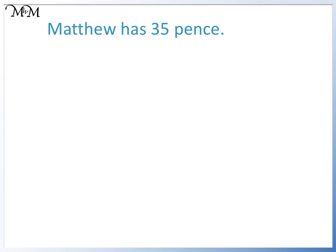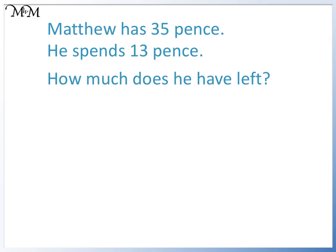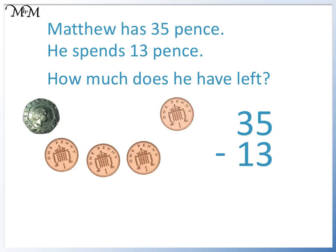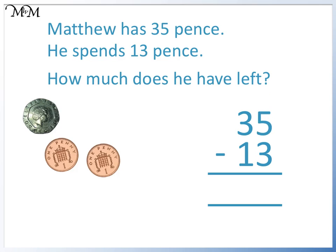Matthew has 35 pence. He spends 13 pence. How much does he have left? Spending 13 pence is subtracting it. We can take away 10, 11, 12, 13. How much does he have left? We can do the subtraction. 5 take away 3 equals 2 and 3 take away 1 equals 2. He has 22 pence left. We can see this in the change. We have 20, 21, 22 pence.